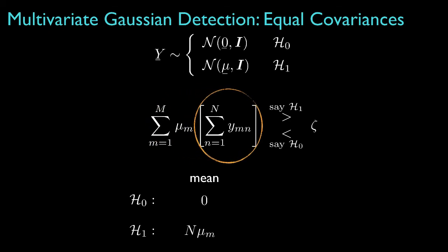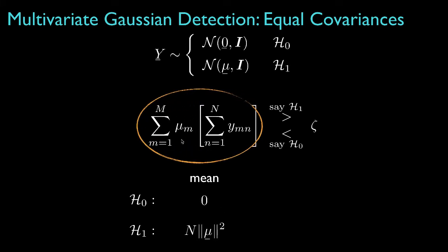Because the mean for the data under hypothesis one is the vector mu, the mean for the summation of the observations is the number of observations N times the m-th element of the mean vector. The corresponding mean for the decision statistic will be the number of observations times the sum of the squares of the elements of the mean vector, or the norm squared of the mean vector.